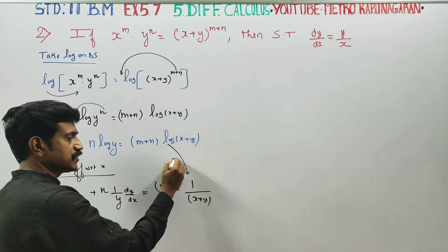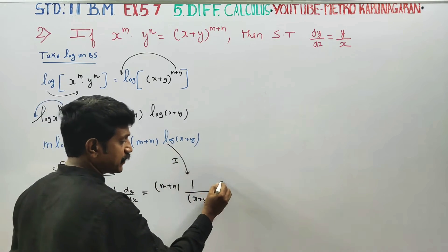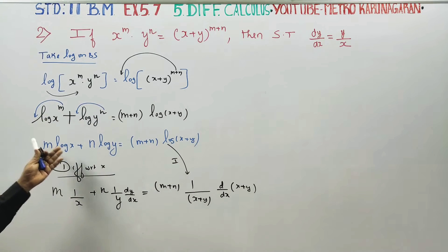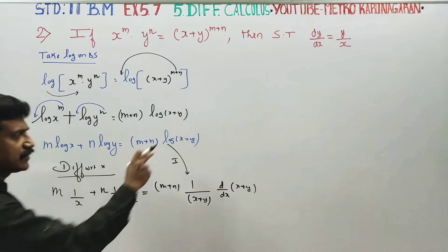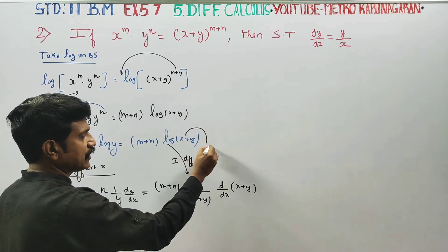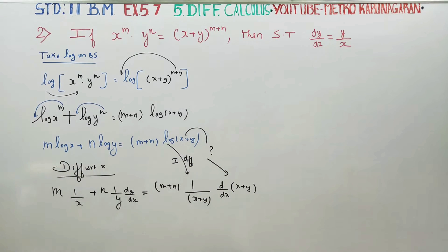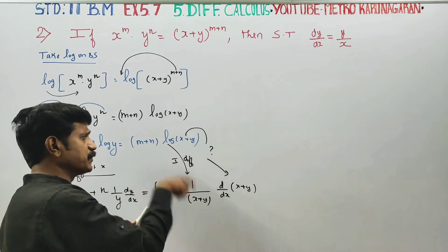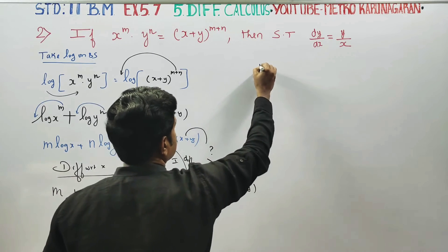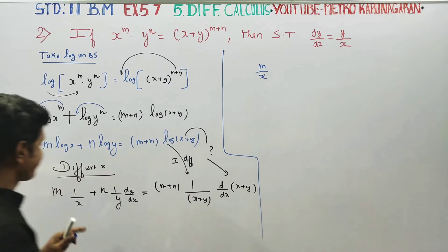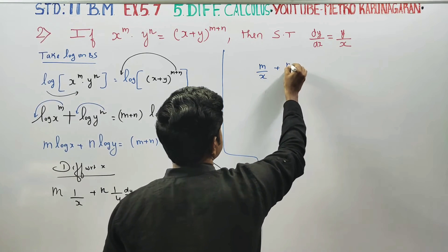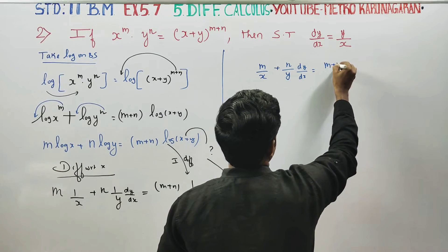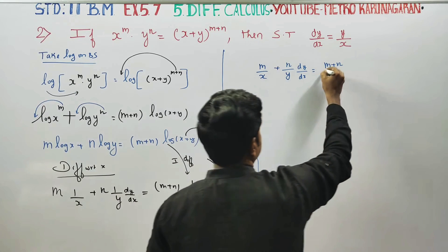Applying the chain rule on the RHS: differentiate log of x plus y using chain rule, giving 1 by x plus y, multiplied by the derivative of x plus y. So we get: m by x plus n by y into dy by dx is equal to m plus n by x plus y.